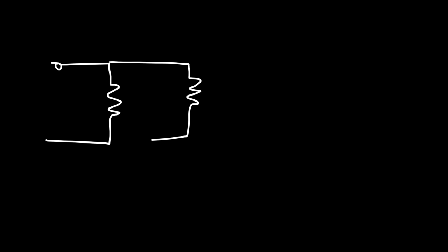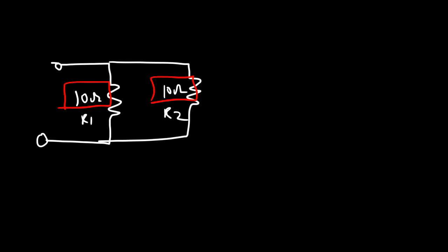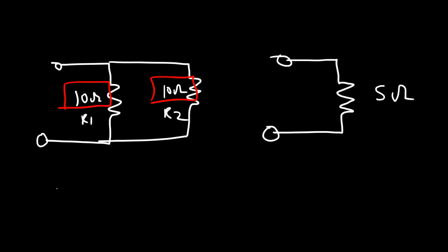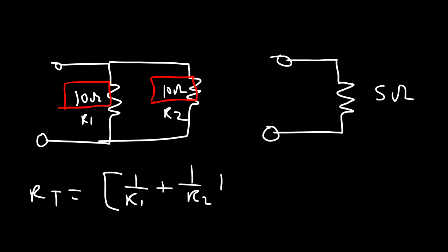Now what if we have two resistors in parallel? Let's say this is a 10 ohm resistor and this is a 10 ohm resistor — we'll call this R1 and R2. So what's the equivalent resistance of this circuit? Whenever you have two resistors in parallel and they have the same value, the equivalent resistance will simply be half of that value. So the equivalent resistance is going to be 5 ohms. To calculate the total resistance for two resistors in a parallel circuit, it's 1 over R1 plus 1 over R2, raised to the minus 1.